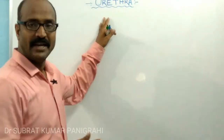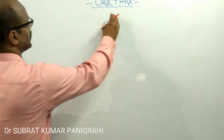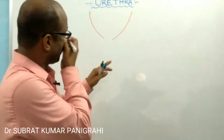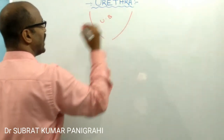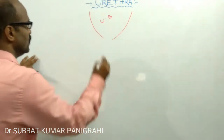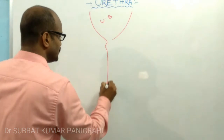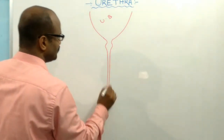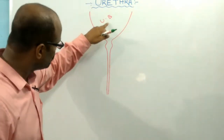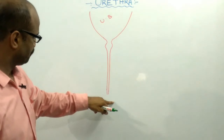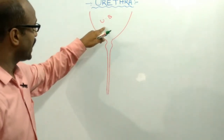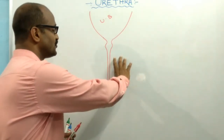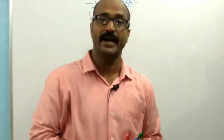The urethra, or male urethra, is the terminal portion of the male duct system, and it arises from the urinary bladder. This is the urinary bladder from where a duct arises, and this duct carries urine. This is the urethra which usually carries urine from the urinary bladder to the outside. But in the case of the male, the urethra carries both semen as well as urine at different times. That's why the urethra absorbs the part of both the urinary and the reproductive system.